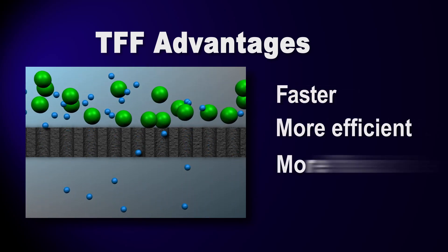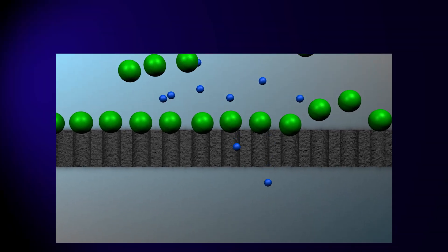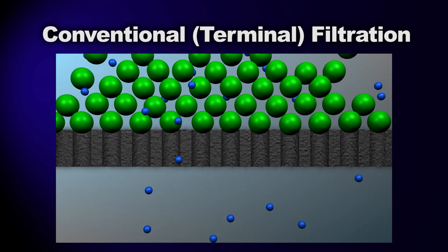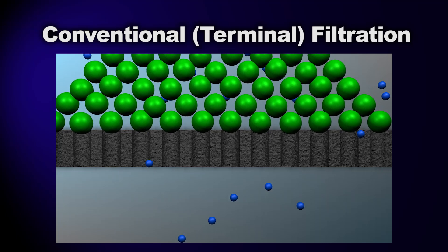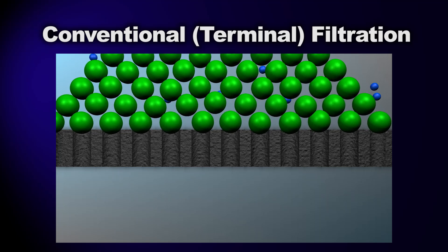In conventional filtration, a fluid is propelled directly into a filter. The particles within the stream that can't fit through the pores of the filter build up at the filter surface, eventually clogging it.